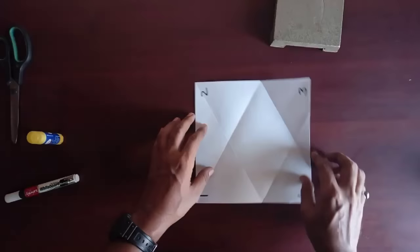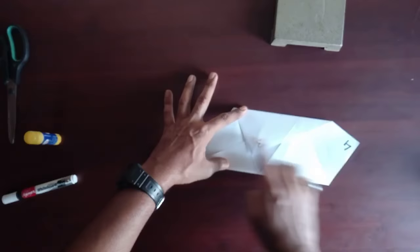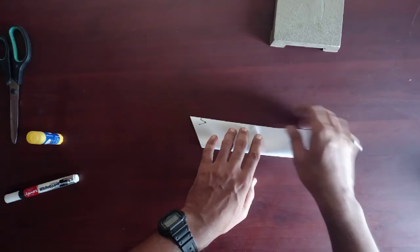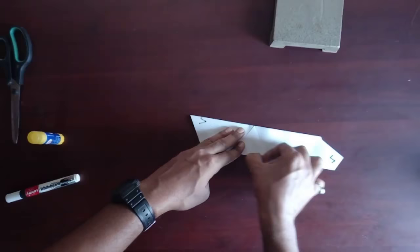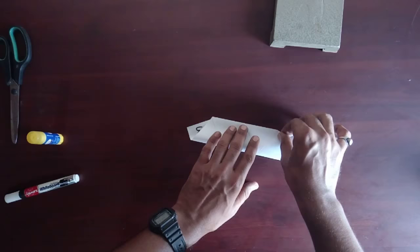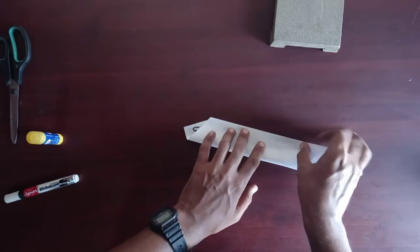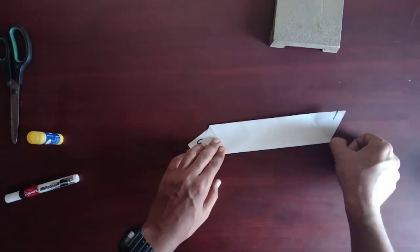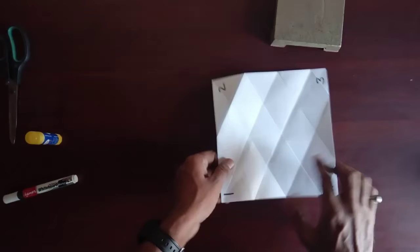Now fold corner 1 and corner 3 to make a midline between them. Continue making additional folds to create more midlines. Open the sheet and bring the lower side over the midline and make a fold.